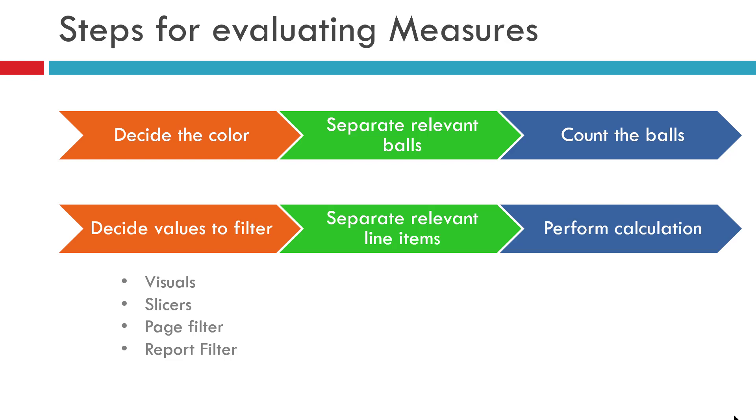And finally, we perform the count of balls which have been separated. In a similar way, the aggregation or mathematical operations are performed on the records which are filtered in the virtual table. Based on the DAX aggregation functions which you are using, those mathematical operations will be performed finally. To summarize the steps, values of filter are taken from the various fields. Then the records of items to be filtered out are done from the big table into a virtual small table. And finally, the mathematical operation or aggregation happens.